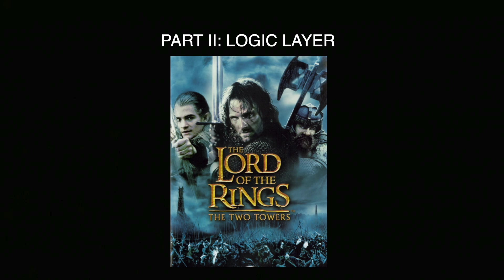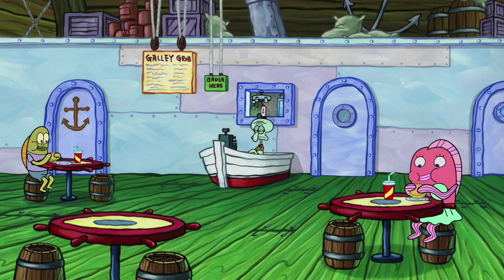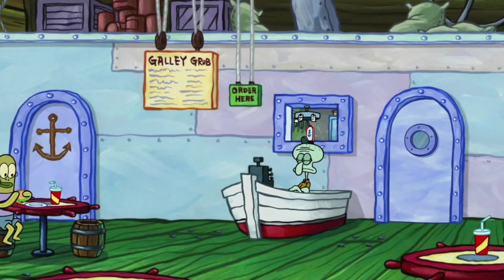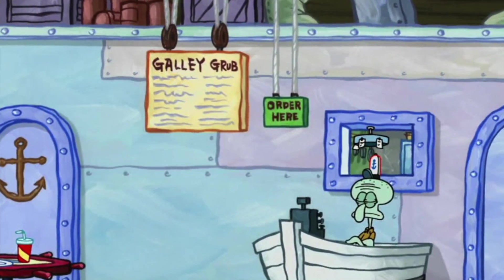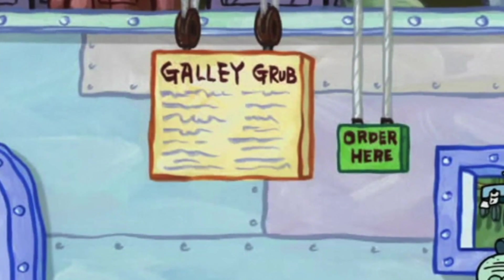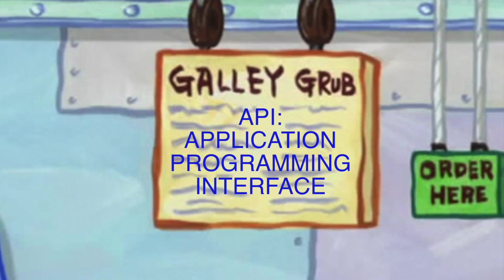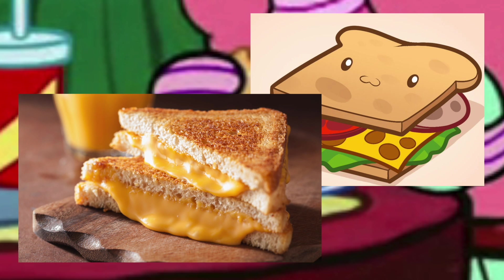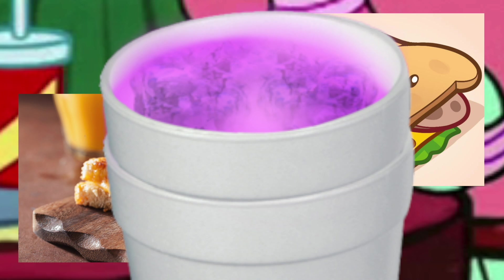Now let's talk about the logic layer. To explain it, we're also going to talk about the menu. The menu is going to represent our API — an application programming interface. In other words, it's all the ways you can interact with our restaurant, or a system in the real world. The front end shows the user what they can do, and the API is what allows them to do it. So maybe on our menu we have a burger, a sandwich, a grilled cheese, drinks, etc. — those are the things the customer, or client, can request from our application.